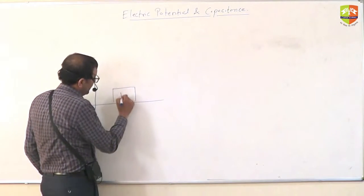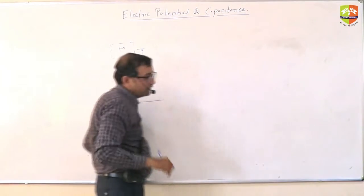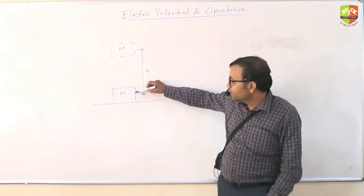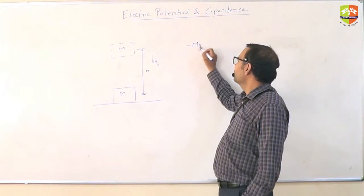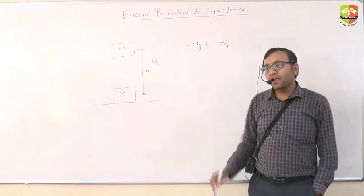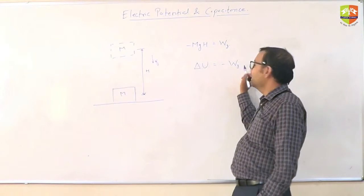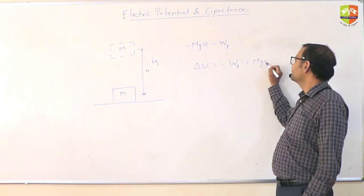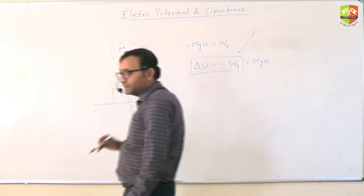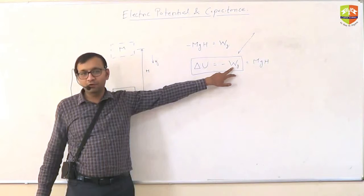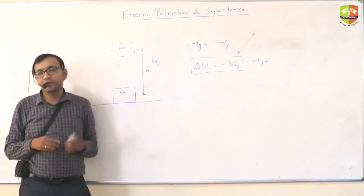Potential energy is just something we define for our convenience, so that you can analyze a scenario more easily. For example, for gravitation — suppose you have a mass m taken to a height h. The work done by gravity is minus mgh. So to define gravitational potential energy, the change in potential energy should be the negative of the work done by gravity, which gives mgh. This approach can be used for any conservative force: negative of the work done equals the change in potential energy.